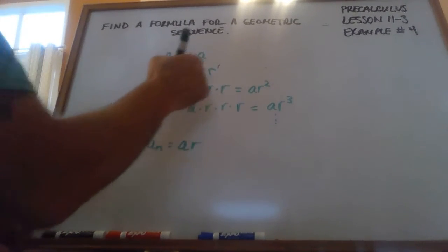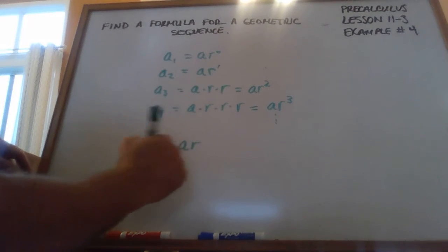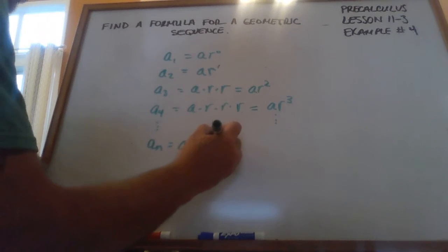This is a one. This is basically r to the zero. So, this is n. This is going to be n minus one.